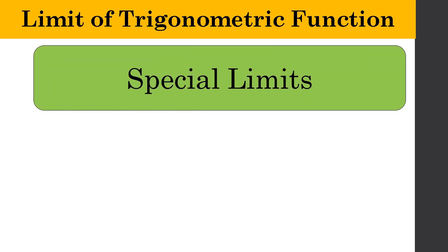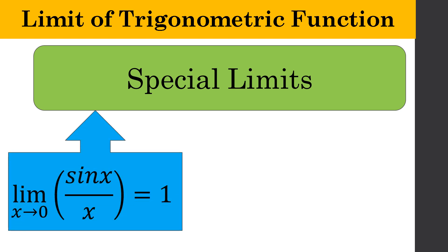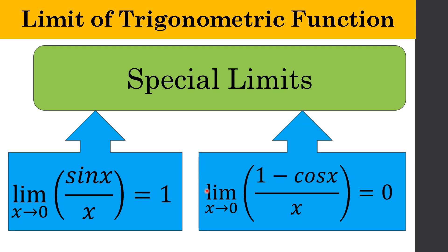Now we look at special limits that cannot be solved by direct substitution. There are two special limits: the limit of sin x over x as x approaches 0 is equal to 1, and the limit of (1 minus cos x) over x as x approaches 0 is equal to 0. You need to memorize these two special limits under trigonometric functions, because they cannot be solved by direct substitution.